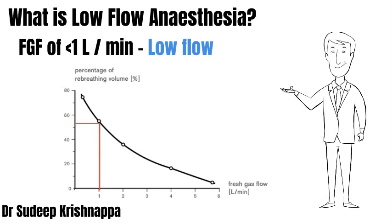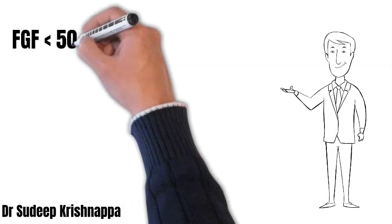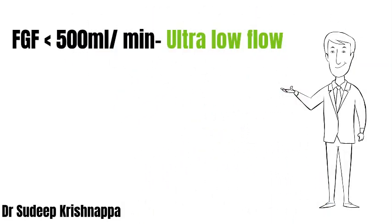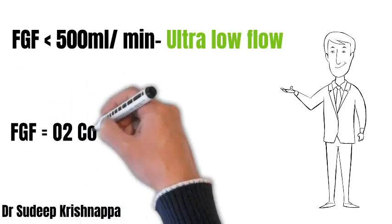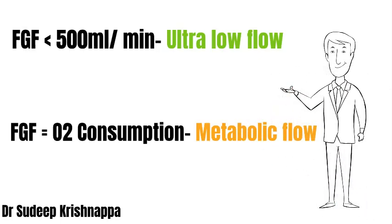This is depicted in the graph shown. As we keep reducing fresh gas flow further, it becomes even better. Fresh gas flow less than 500 mils per minute is defined as ultra low flow anesthesia or minimal flow anesthesia. If we drop the fresh gas flow to an amount equivalent to the oxygen consumption of the patient, it is defined as metabolic flow.